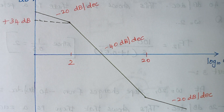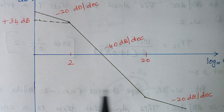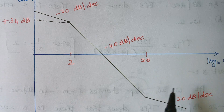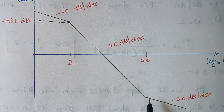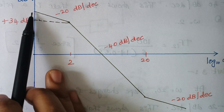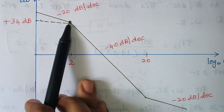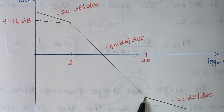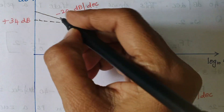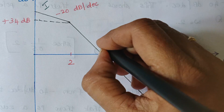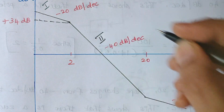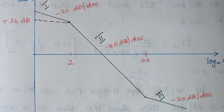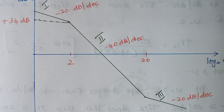When you look at this Bode plot, how many parts does it have? It has three parts — this is part 1, this is part 2, and this is part 3. Now we are going to solve part 1.